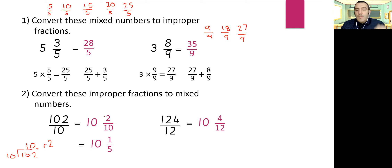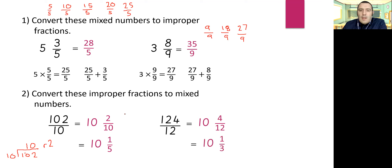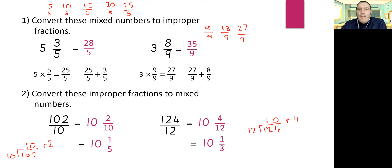124 over 12 is 10 and four twelfths, which can be simplified because 4 and 12 are both in the four times table — so that's equivalent to 10 and one third. Using the bus stop method: 12 into 1 I can't do, 12 into 12 goes once, remainder 4. So 10 wholes, and remainder 4 over the denominator gives four twelfths. Then dividing the numerator and denominator both by 4 gives the equivalent fraction one third.